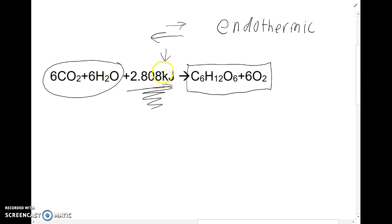Now, if this unit of energy was over here on the right side with the products, then that heat would be being produced by the reaction because it would be with the products.